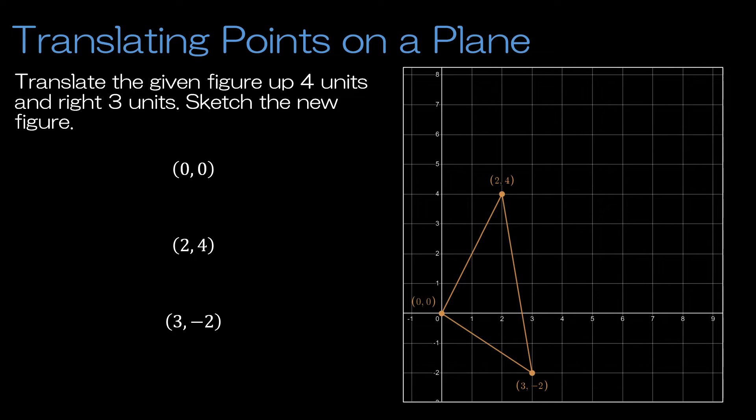One application of being able to plot points is translating points on a plane. In this case, we're asked to translate the given figure, which is a triangle, up 4 units and to the right 3 units. There's a couple of ways to think about doing this. We can just look at the picture. If the point starts at (0, 0), then I'm going to go 1, 2, 3, 4 points up, and 1, 2, 3 points to the right, and that's where my new point is.